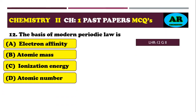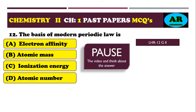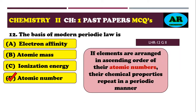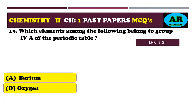MCQ 12: the basis of modern periodic law is — option alpha: electron affinity, option beta: atomic mass, option charlie: ionization energy, option delta: atomic number. The correct option is delta — atomic number. The modern periodic law states that elements arranged in ascending order of atomic numbers show repeating chemical properties periodically.